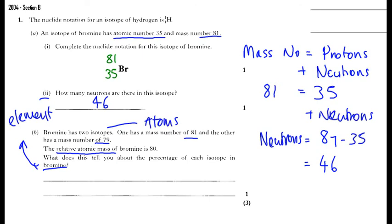So, to get eighty as the average, you have to have fifty percent eighty-one and fifty percent seventy-nine.